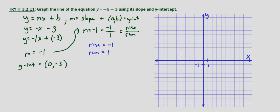We'll start off by plotting our y-intercept 0 negative 3. So from the origin we just go down 3 units. So 1, 2, 3.